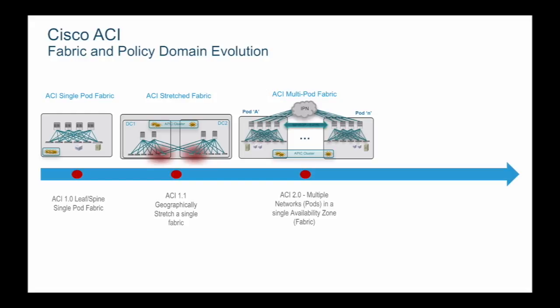ACI Release 2.0 added support for ACI multipod. In ACI multipod, each pod is a separate leaf-spine topology where all pods are connected over a layer 3 IP network. The ACI multipod fabric is managed by a single APIC cluster, making the multipod fabric a single change and management domain. Some advantages of multipod over stretched fabric are higher scale and fault domain isolation.